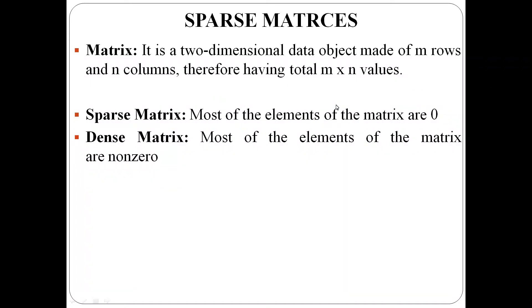Sparse matrices. First of all, what is a matrix? It is a two-dimensional data object made of m rows and n columns, therefore having total m by n values.